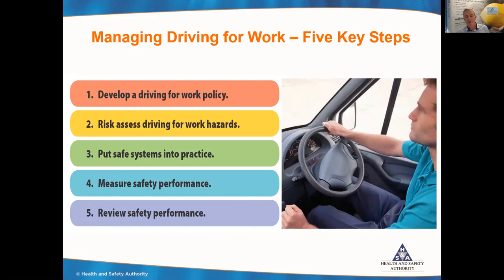The five key steps to implementing a driving for work policy: first, put the policy in place; second, risk assess the hazards involved in the driving for work activity — bearing in mind this is on the public road, away from where the employer has direct control, but they do have influence; third, identify the hazards and put in place control measures and expected behaviors; fourth, put safe systems into place and communicate them to drivers; fifth, measure and review the performance. Simple procedures include planning journeys to ensure adequate time, so drivers aren't under pressure to make up time, timing any calls or messages into the journey, and allowing adequate breaks to manage fatigue. There's no point putting a policy in place unless you see how it's working and make improvements.